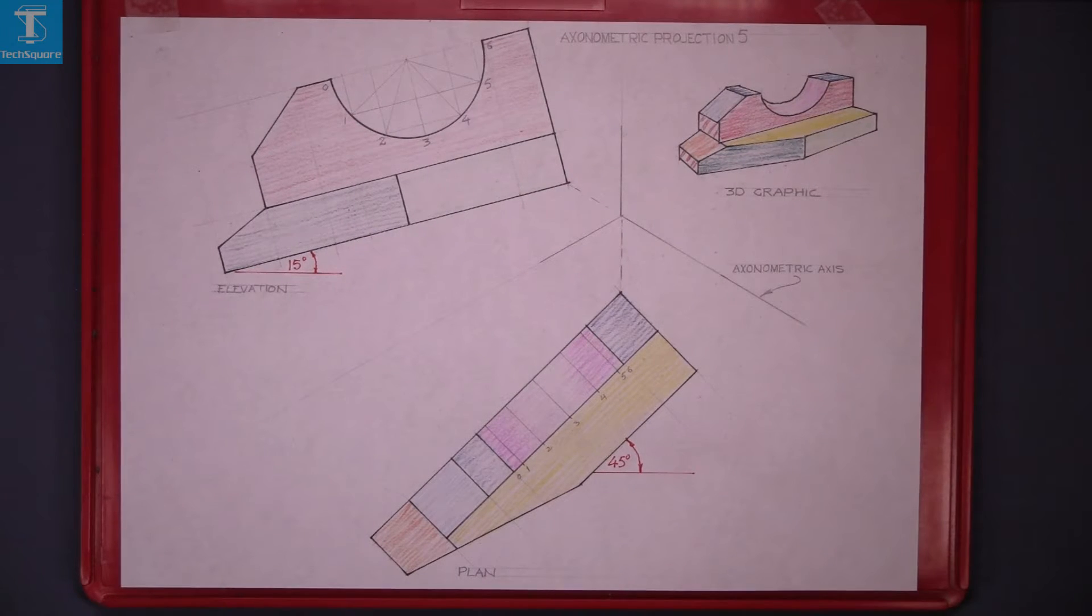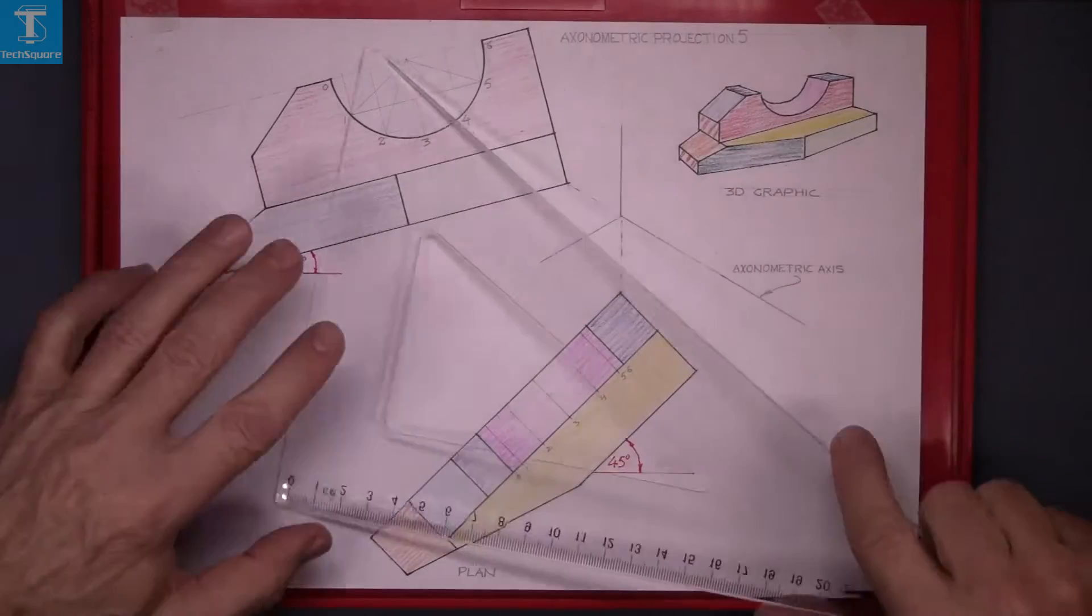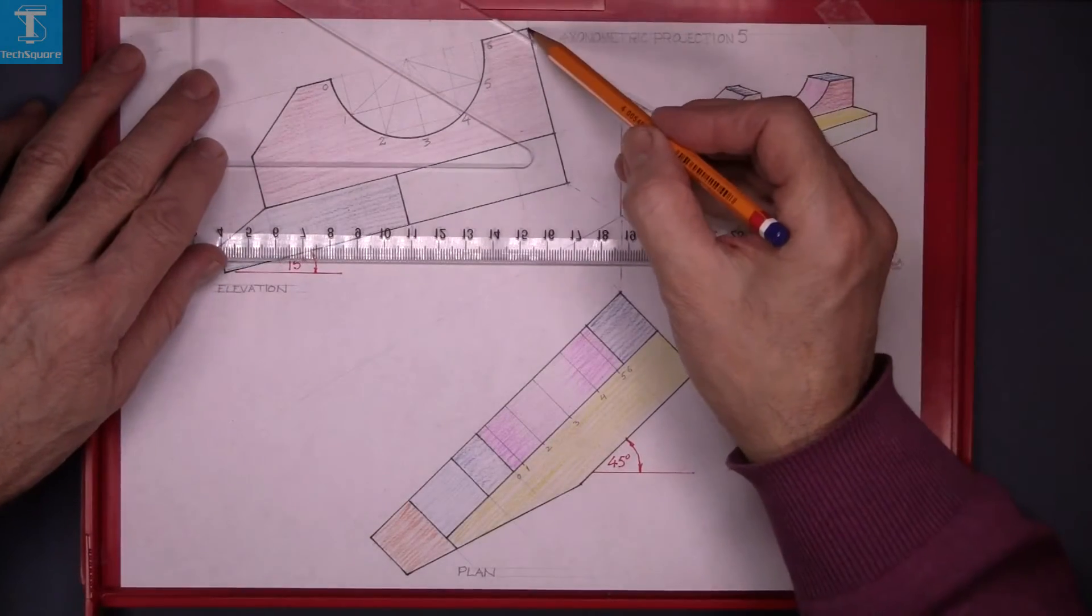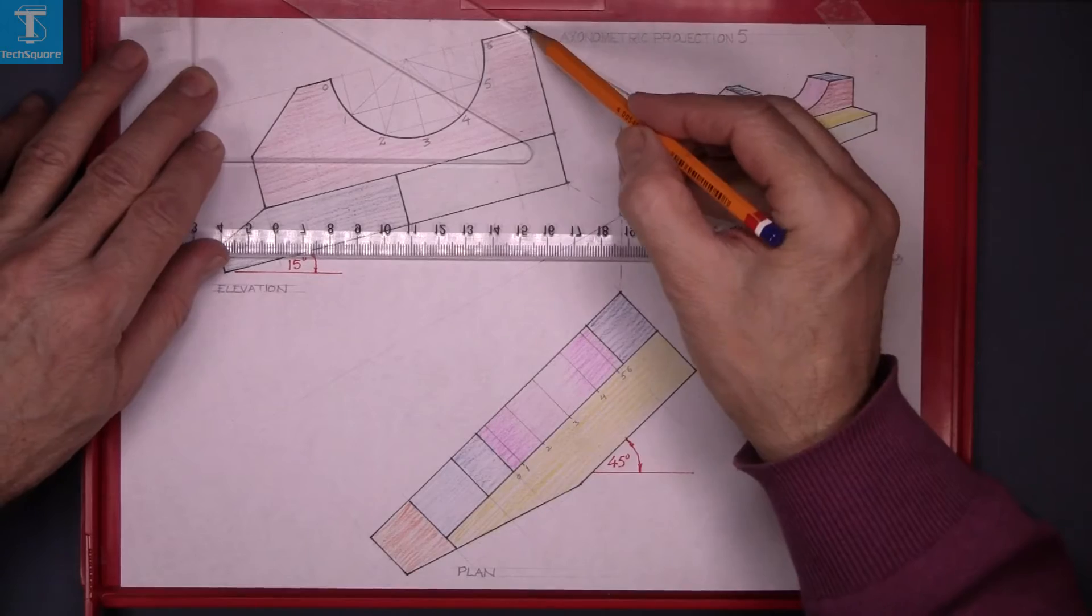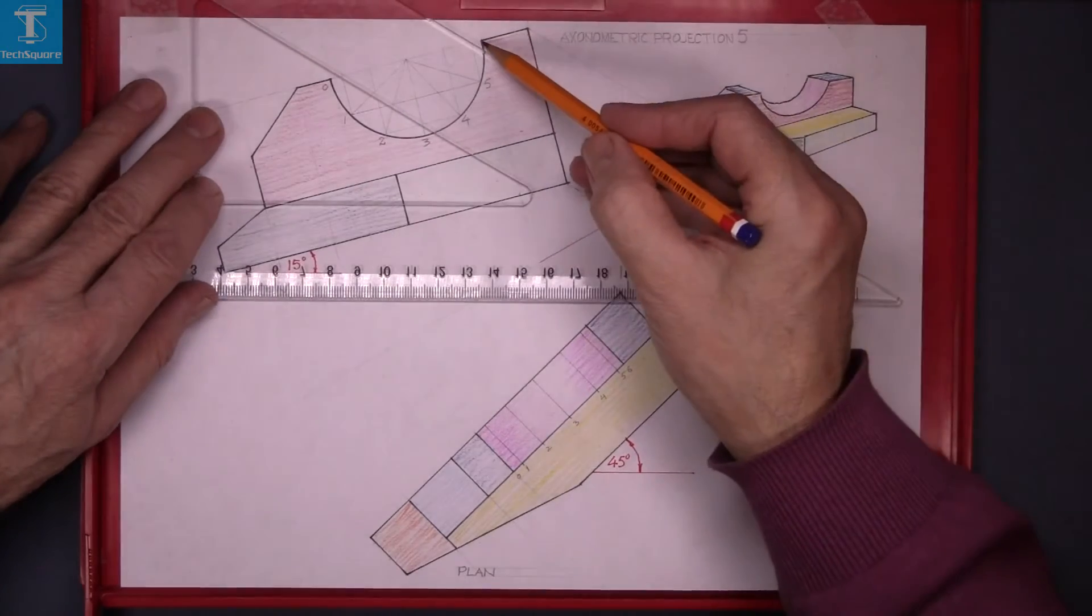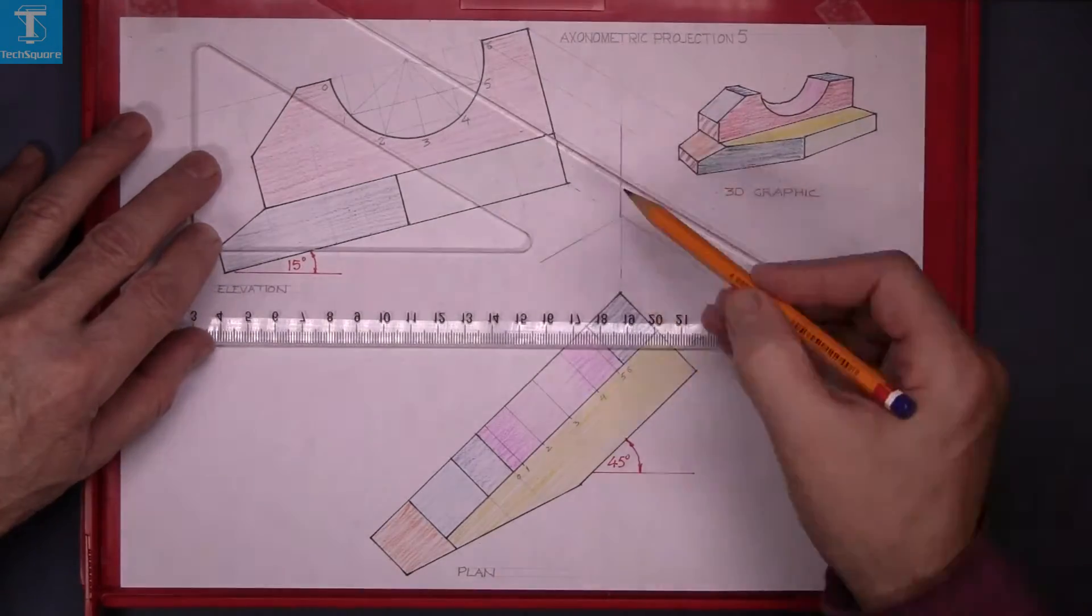First thing to do is to project in the points from the elevation. Bring all the points down and that includes the six points on the circle.